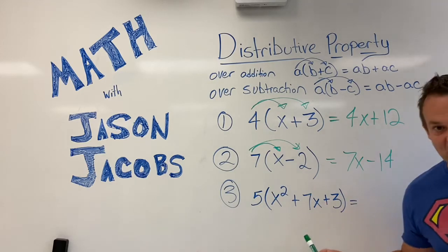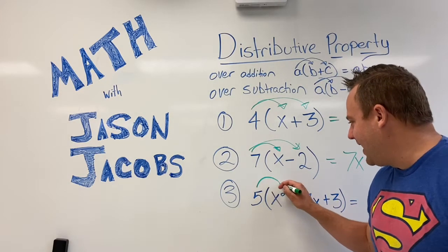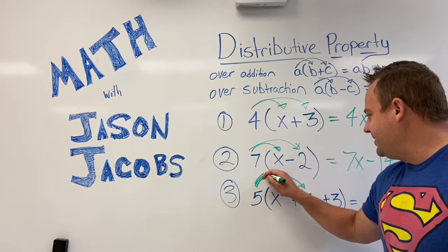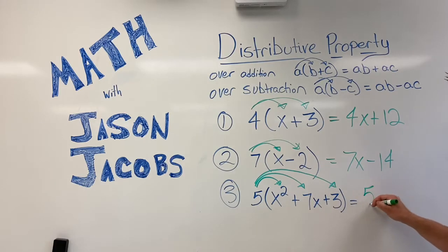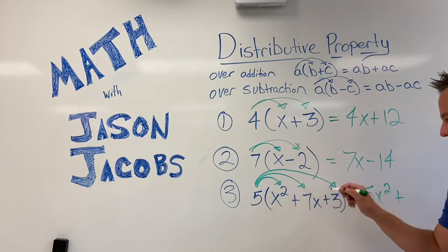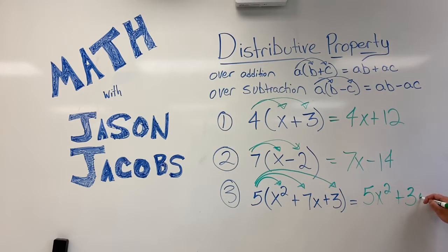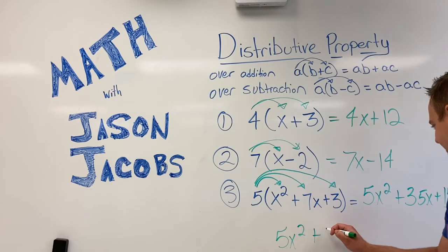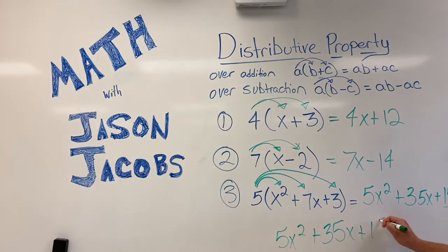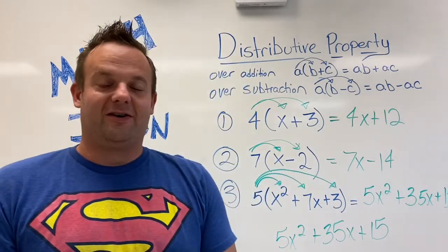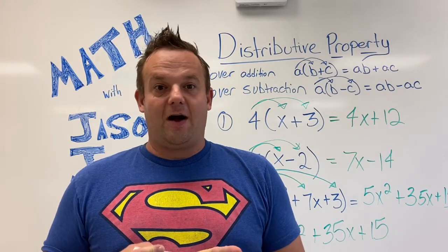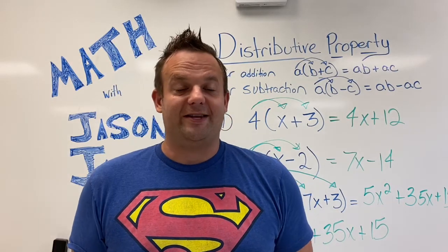And now for the hardest one. Let's see if you guys got it. The five distributes to all three terms inside the parentheses. And we have five times x squared is 5x² plus five times seven is 35x plus five times three is 15. So we have 5x² plus 35x plus 15 there. And thank you, guys. I hope you did great on the distributive property learning it today. And my name is Jason Jacobs. I hope you like, comment and subscribe. And we're going to now go into part two on the distributive property.